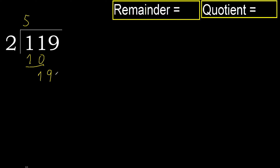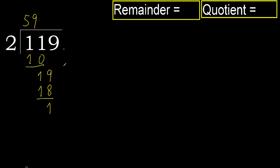Next. 19. 2 multiplied by 9 is 18, which is not greater. Subtract: 19 minus 18 is 1. Next. That is not a number, therefore finish it.